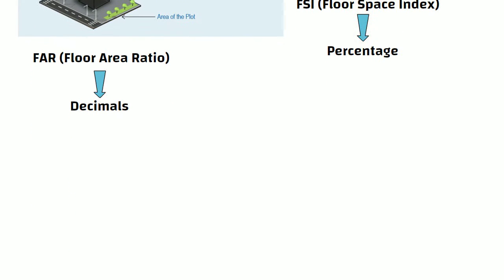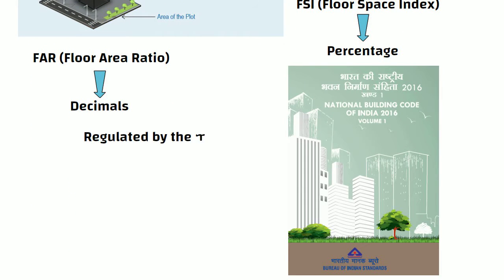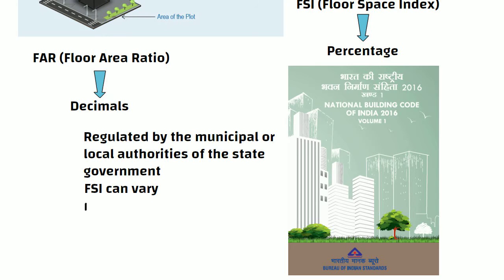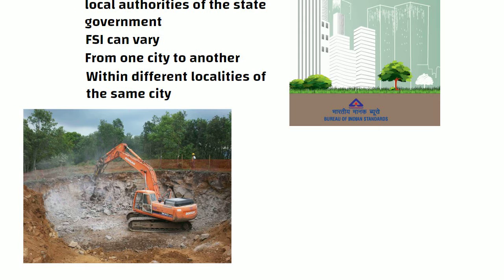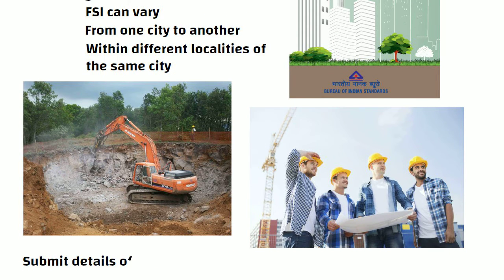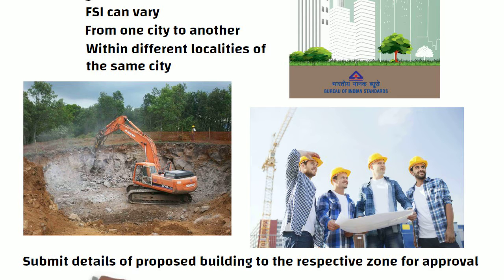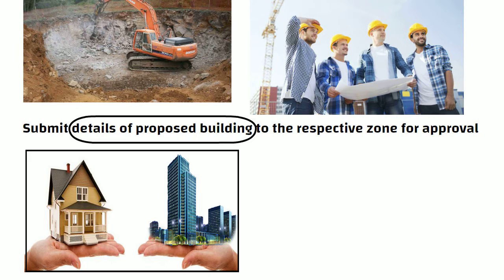FSI is set based on the National Building Code and it is regulated by the municipal or local authorities of the state government. The FSI can vary not only from one city to another but also within different localities of the same city. Before commencing any construction project, builders are required to submit details of the proposed building to the respective zone for approval. These details encompass information such as whether the building is intended for residential or commercial purposes, its height and structure, and the land area it will occupy.